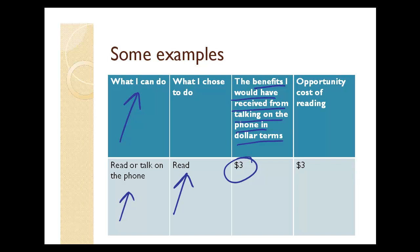And I say yes, I would have. And they say, could you put a dollar amount on those benefits? Suppose the dollar amount is three dollars worth of benefits. That means I forfeit those three dollars worth of benefits of talking on the phone when I choose to read. So we can say the opportunity cost of reading to me is those foregone three dollars worth of benefits.